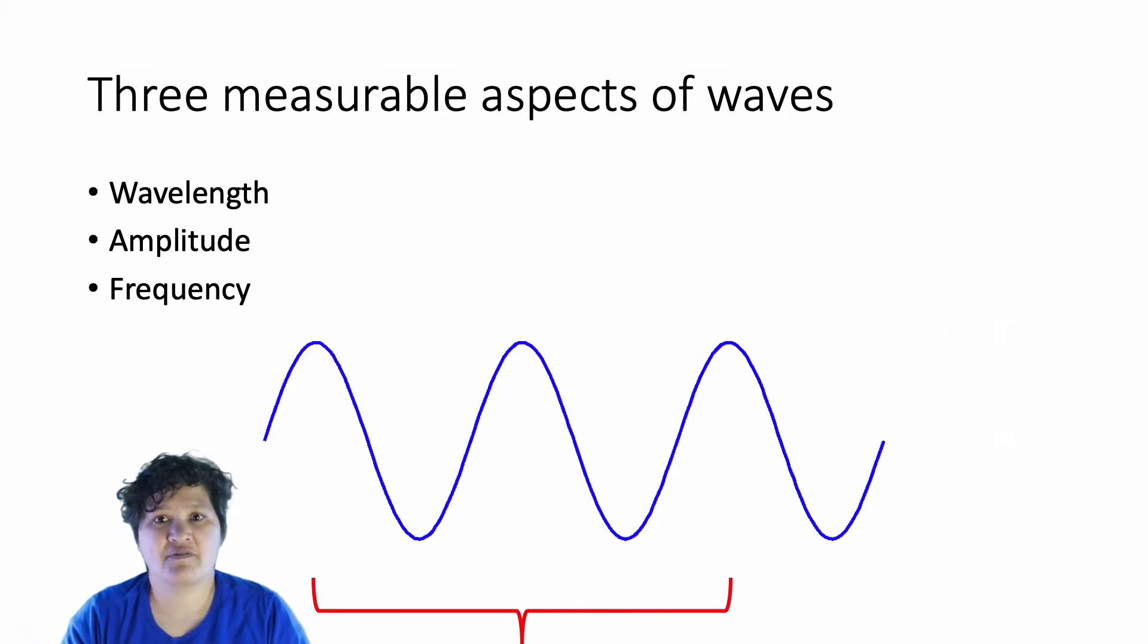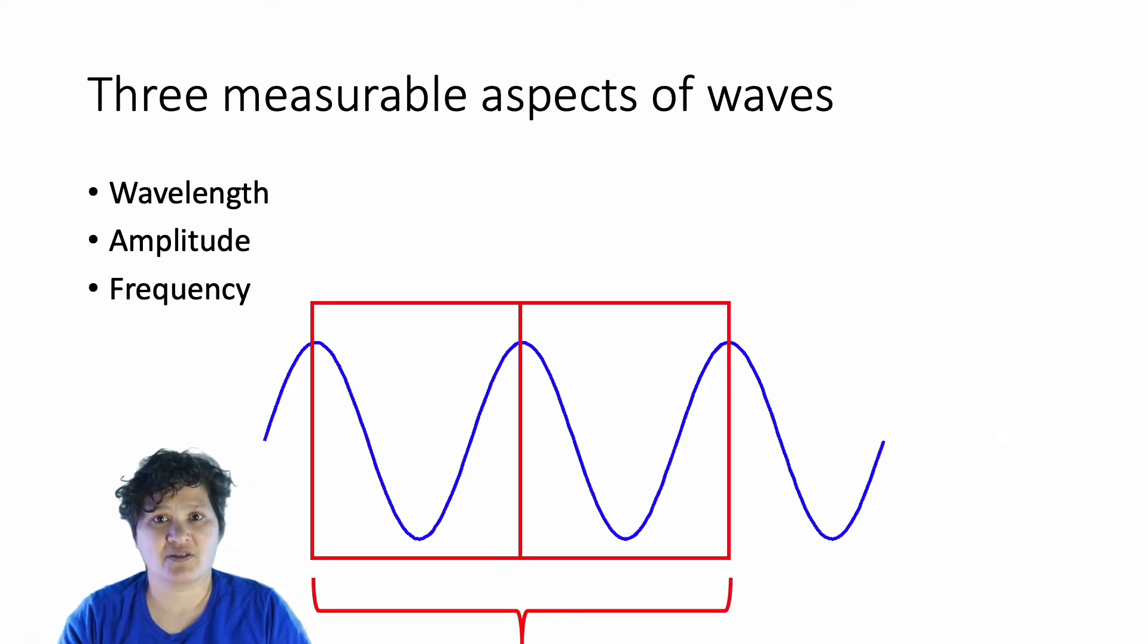Frequency is the number of waves that pass a point within a given period of time. So in this case, if this is what passes the point in that given period of time, we can count one, two complete waves during that period of time.